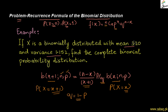The information given is the mean, which is the expected value of x equal to 3.20, and the variance V(x) equal to 1.152. First, we need to find our parameters n and p. We will use the mean and variance formulas to compute them.